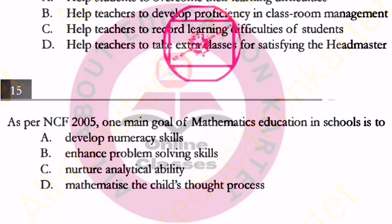According to NCF 2005, the purpose of this mathematics question relates to option D — mathematize the child's thought process. This question falls under Maths and Science pedagogy. NCF 2005 calls this EBS pedagogy, and the answer is to mathematize the child's thought process through mathematization.